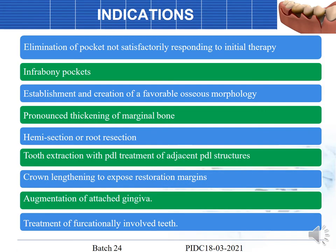The indications for periodontal surgery include: elimination of pockets not satisfactorily responding to initial or phase one therapy, infra-bony pockets, establishment and creation of favorable osseous morphology, pronounced thickening of marginal bone, hemisection or root resection, tooth extraction with periodontal treatment of adjacent structures, crown lengthening to restore or expose restoration margins, augmentation of attached tissues, and treatment of furcation-involved teeth.